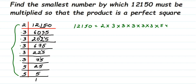If a number is a perfect square, its prime factors will always be in pairs. Let's pair up the factors. We can pair two 3s, and another pair of 3s, and the two 5s form a pair. But we can see that one 2 and one 3 are left unpaired.